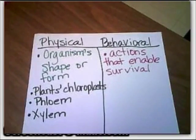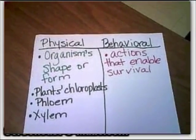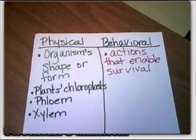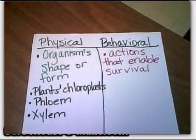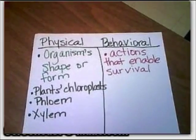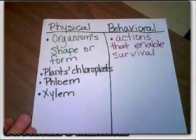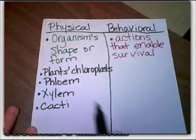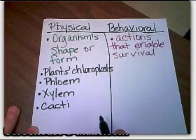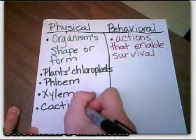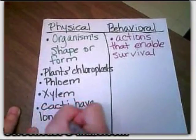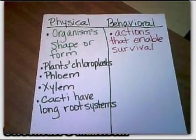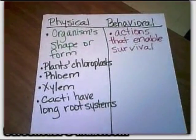We're going to get into the desert biome very soon. Desert plants have special physical adaptations to help them survive because the desert receives very little precipitation. Cacti — the plural of cactus — have long root systems. Long root systems help to preserve water over long periods without rain.